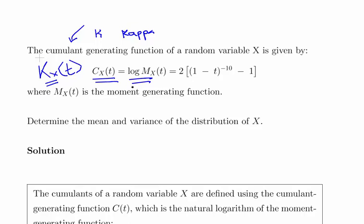There are actually two cumulant functions - there's a thing called a second cumulant function which is a little bit different. But we'll just stick with the question here. The cumulant generating function is defined as 2 times 1 minus t to the power of minus 10 and then minus 1, where that's the moment generating function. So, determine the mean and the variance of the distribution of X. There's a good bit of theory in this really.